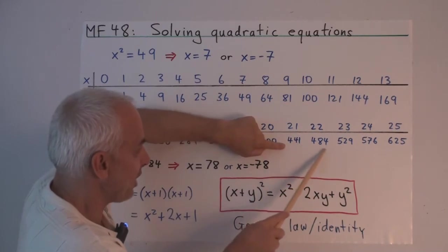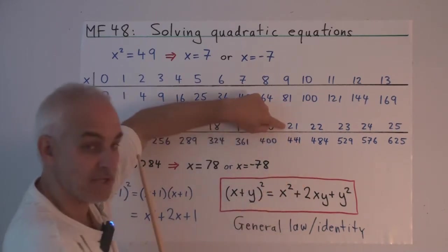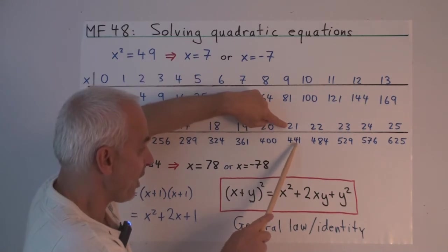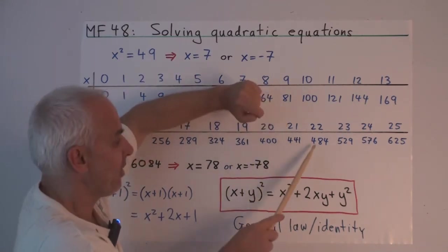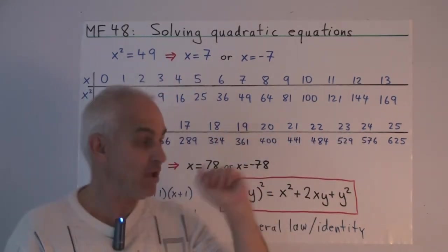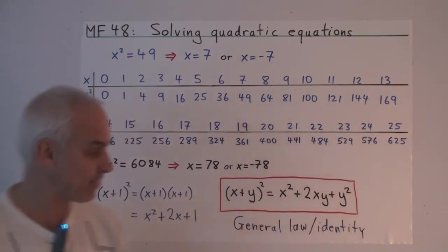Similarly, to go from here to here, we take this number, add 2 times that, which would be 42. We add that, and we get 483, and then we add one more to get 484. That's a somewhat faster way of generating a table like this.